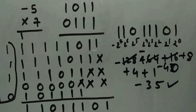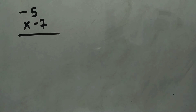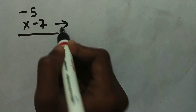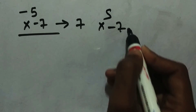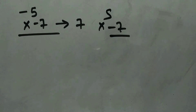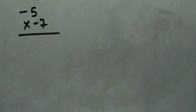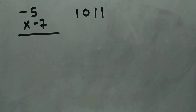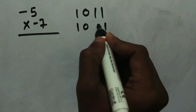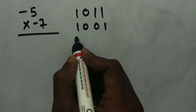Now let's deal with one more example — this one is very crucial. Here we have minus 7 at the bottom. In the previous case it was positive 7 at the bottom. Whenever a negative number is at the bottom of the multiplication, we need to complement the last partial product. Minus 5 in two's complement is 1011, and minus 7 is 1001 — that is minus 8 plus 1, with two zeros in between.